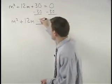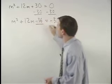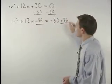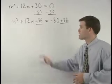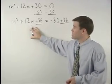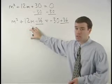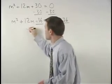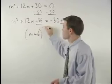So we add 36 to both sides of the equation. Notice the left side now factors as m plus 6 times m plus 6, or m plus 6 squared.